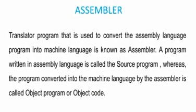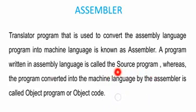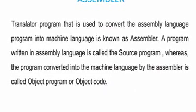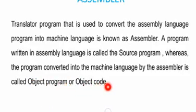A program written in assembly language or in any other high-level language is called the source program or source code. Whereas the program converted into machine language by the assembler is called the object program or object code.